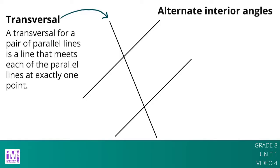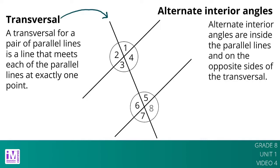Alternate interior angles are created when two parallel lines are crossed by a transversal. Alternate interior angles are inside the parallel lines and on the opposite sides of the transversal. For example, in this figure, angles 3 and 5 are alternate interior angles, and angles 4 and 6 are also alternate interior angles.